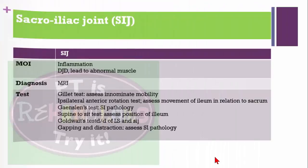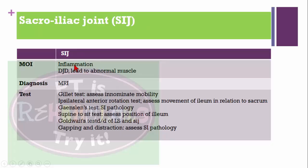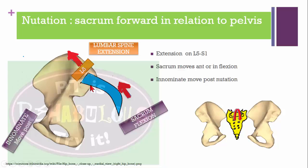Sacroiliac joint problems may be caused by inflammation, degenerative joint disease, or muscle imbalance. Diagnosed with MRI. Special tests include: Gillet test for innominate mobility; ipsilateral anterior rotation test for ilium in relation to sacrum; Gaenslen's test for sacroiliac pathology; supine-to-sit test for position of the ilium; Golvet test for lumbar spine and sacroiliac joint differential diagnosis; gapping and distraction tests for sacroiliac joint pathology.